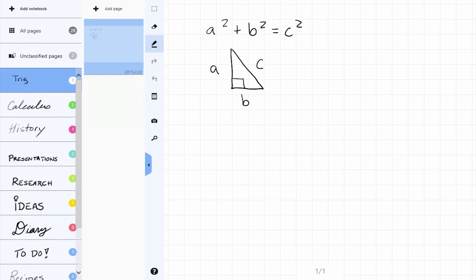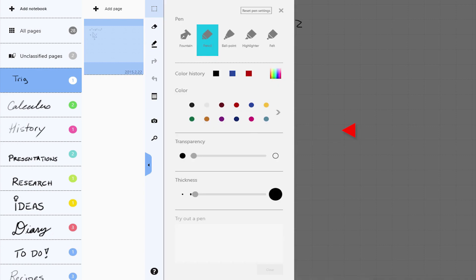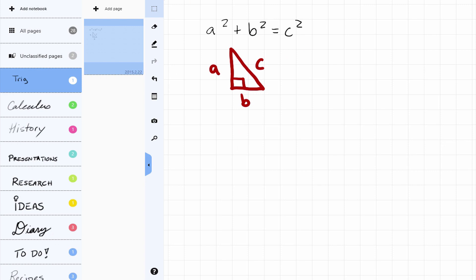You know what? I think I'd like to change the color of this figure I drew. I'll use the Select tool to select it, select Line Style, and change the color and thickness to make it stand out. That was easy.